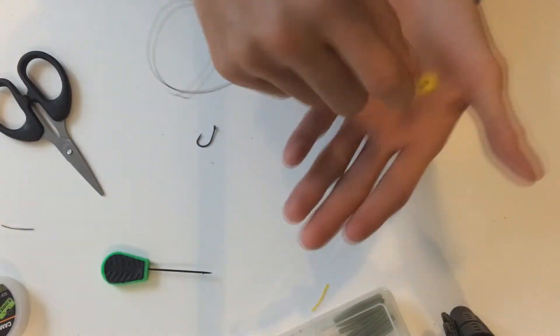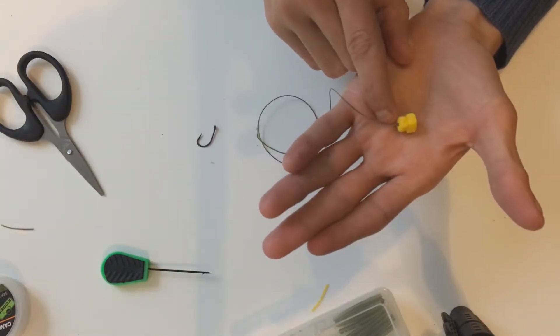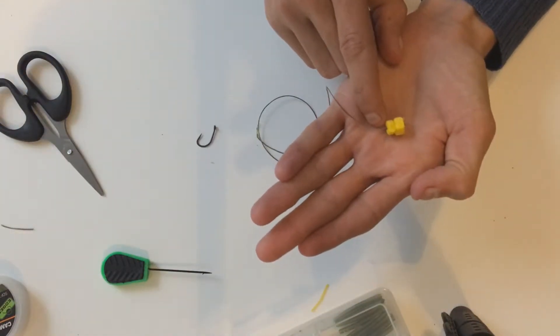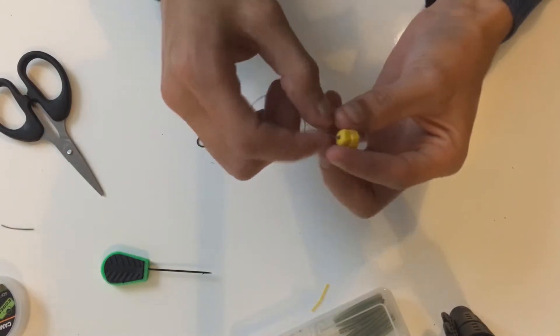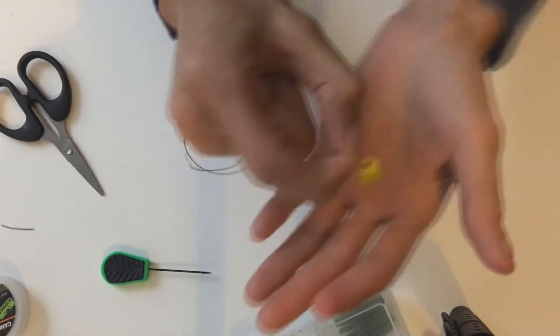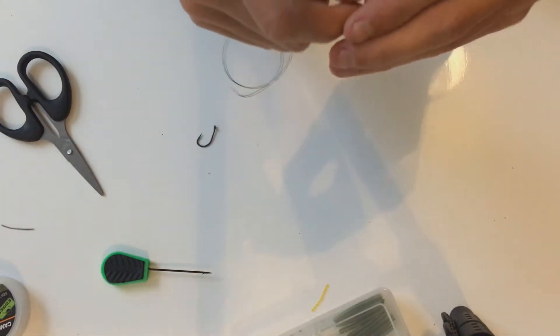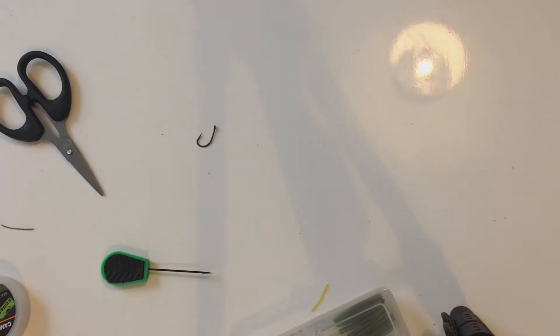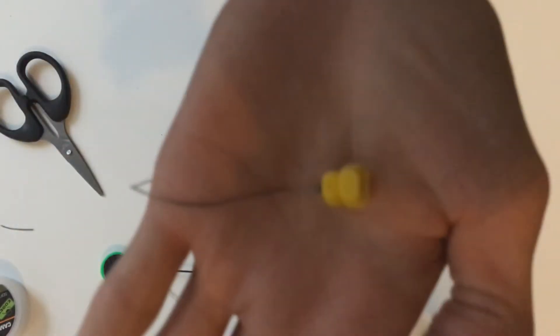So what we're going to do before we put that on is we're going to just at the very bottom below the knot strip back roughly half an inch of coating. So we're going to strip back about that much if possible. So I'm going to do that with my teeth because my stripper tool is somewhere else.